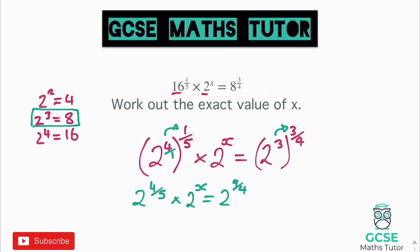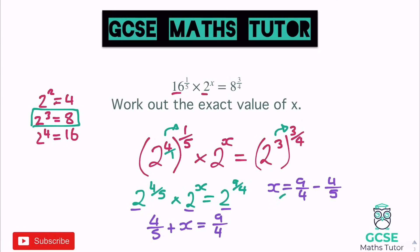All the base numbers are now 2, so we can just compare the powers. We have 4 fifths plus x equals 9 quarters. To solve for x: x equals 9 quarters minus 4 fifths. We need a common denominator — multiplying top and bottom of the first fraction by 5 and the second by 4.